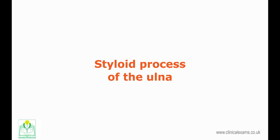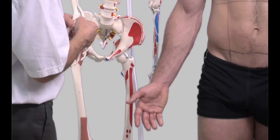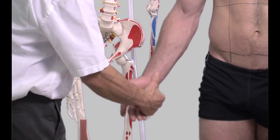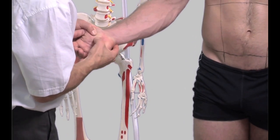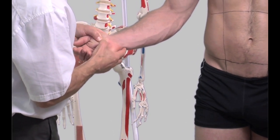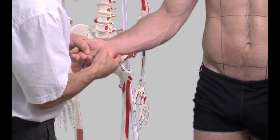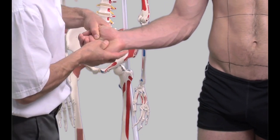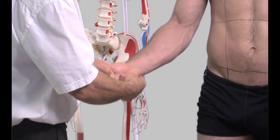The styloid process of the ulna is a small and sometimes sensitive projection that can be palpated in the medial aspect of the wrist just above the crease line. It is partially shielded by the tendons of the flexor and extensor carpi ulnaris. To expose the styloid process of the ulna, deviate the wrist radially or laterally.